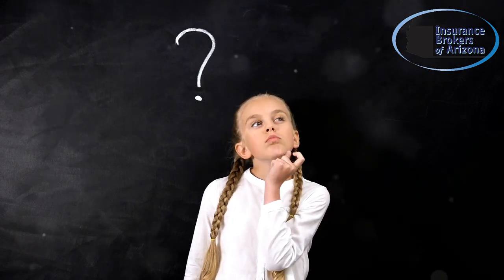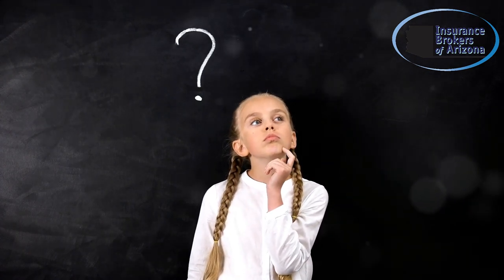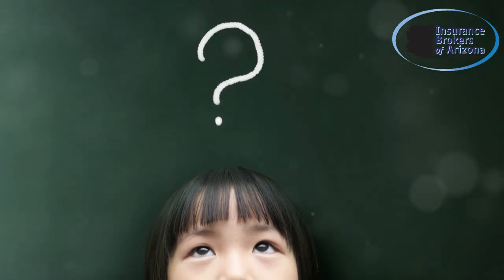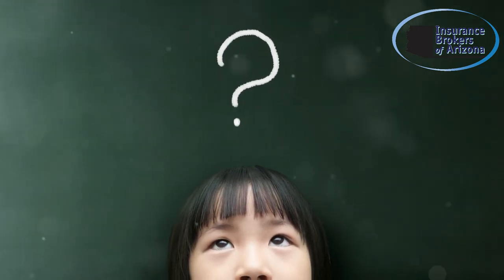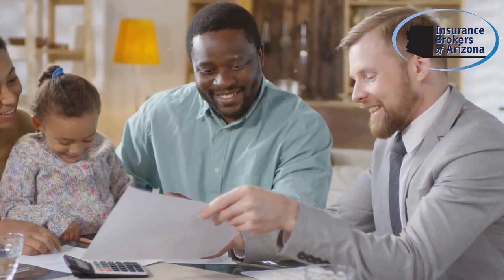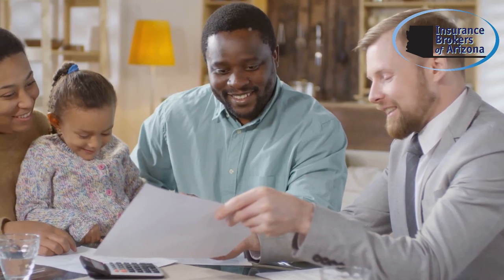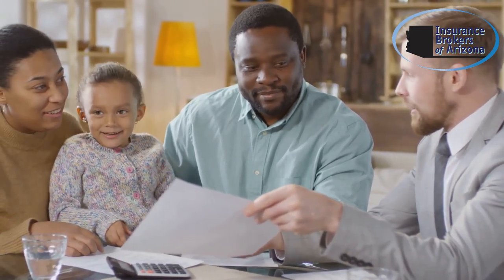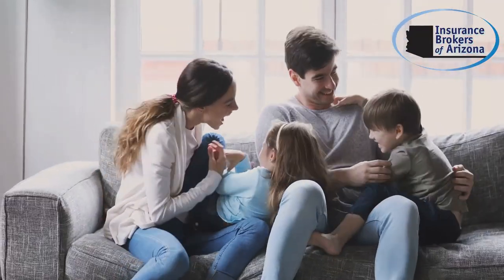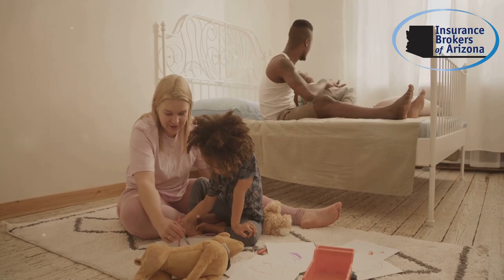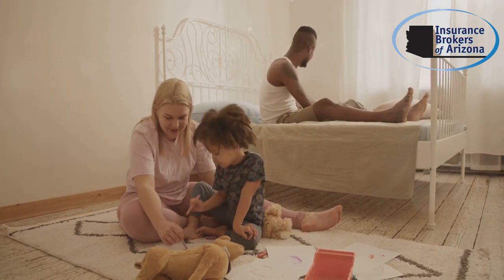So what exactly is a beneficiary? It's a term you'll hear often in the world of insurance, but it's important to fully grasp its meaning. A beneficiary is the person who will receive your life insurance payout. This could be a family member, a friend, or even an organization. Choosing the right one ensures your loved ones are financially protected — it's a decision that requires careful thought and consideration.